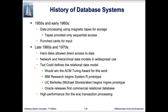The last topic is the history of database systems. It started in the 1950s and 1960s, when computers used punch cards for programming and input, and magnetic tapes for storage. In the late 1960s and 1970s, hard disks allowed direct access to data, and network and hierarchical data models were in widespread use. Also during the 1960s–1970s, Ted Codd invented the theoretical relational data model and received the ACM Turing Award for this work.